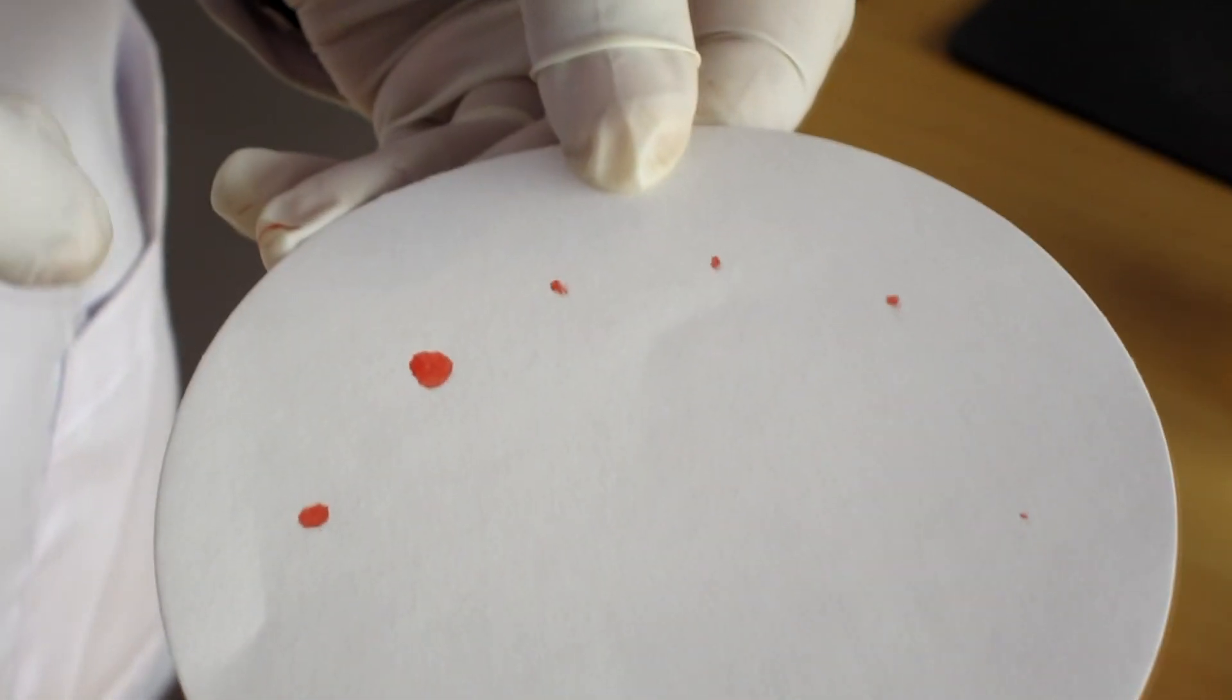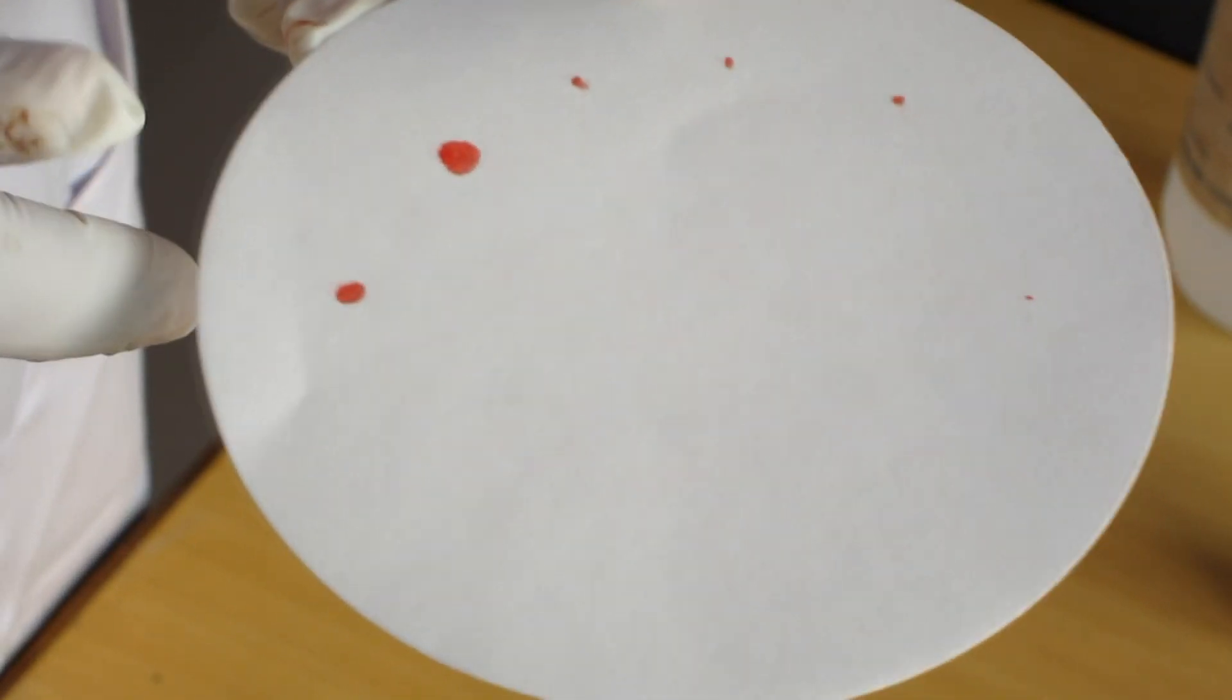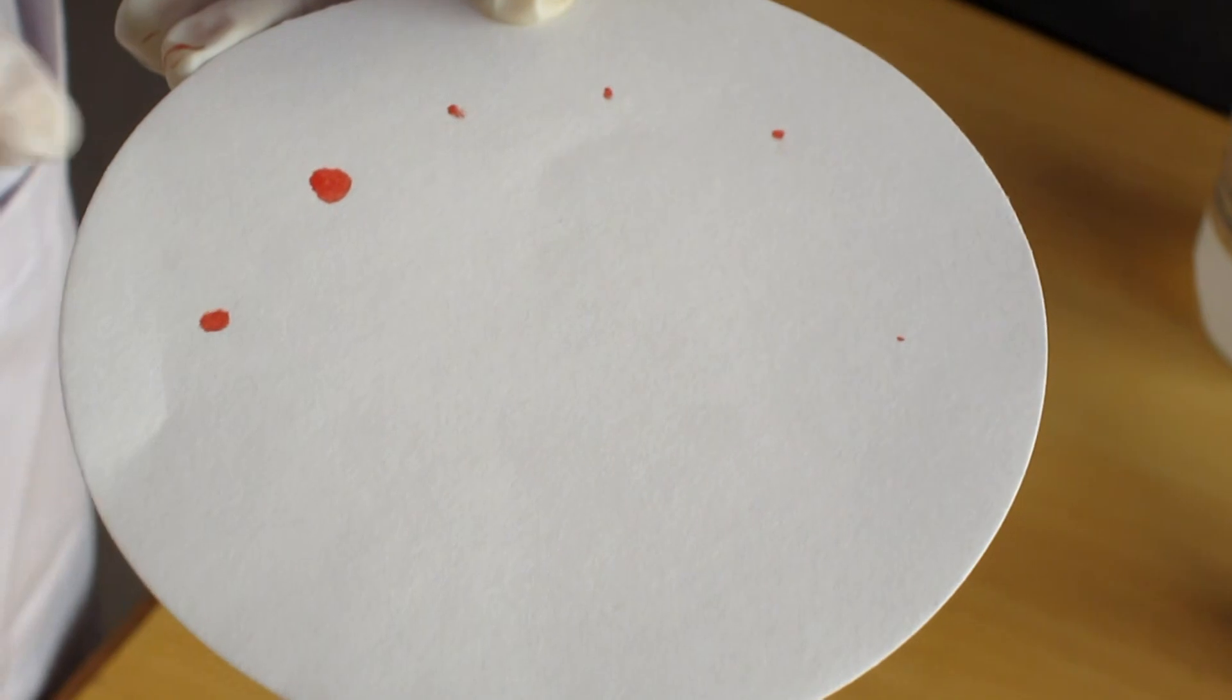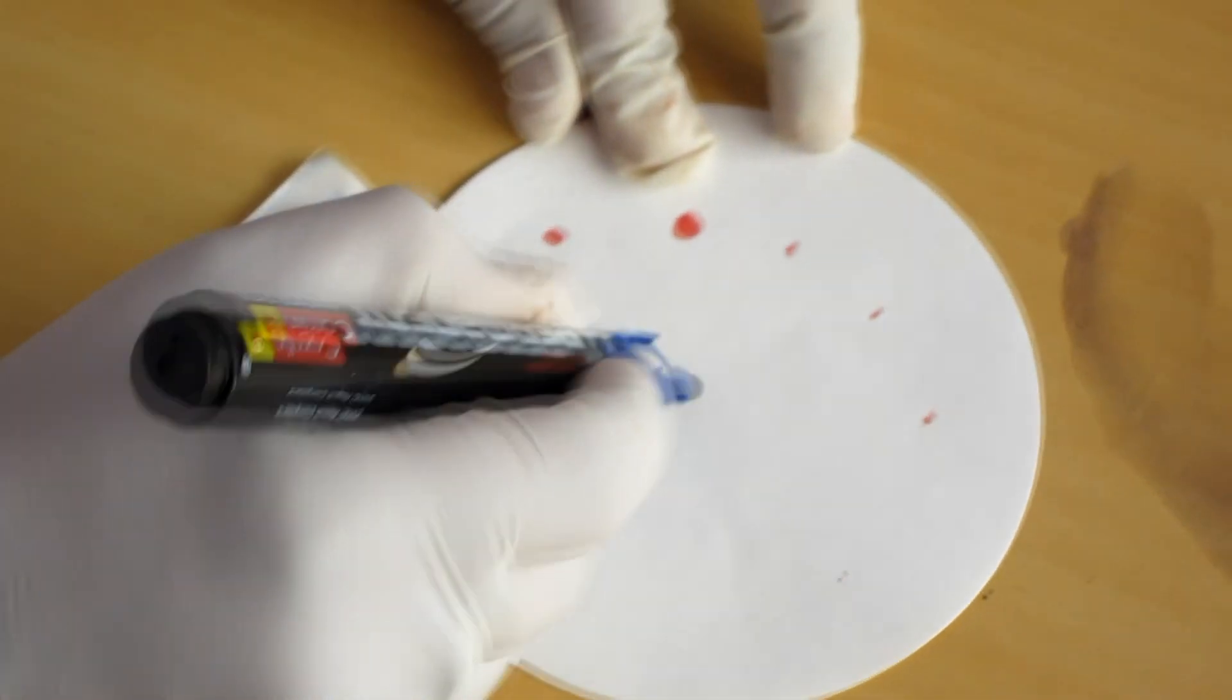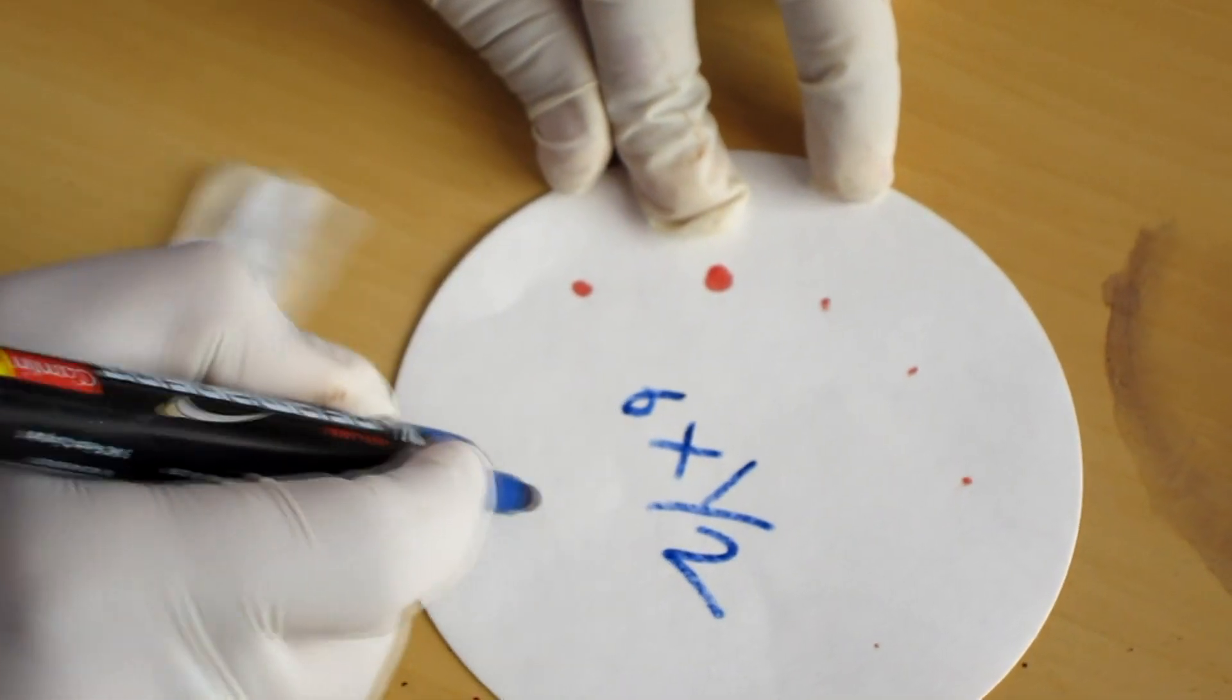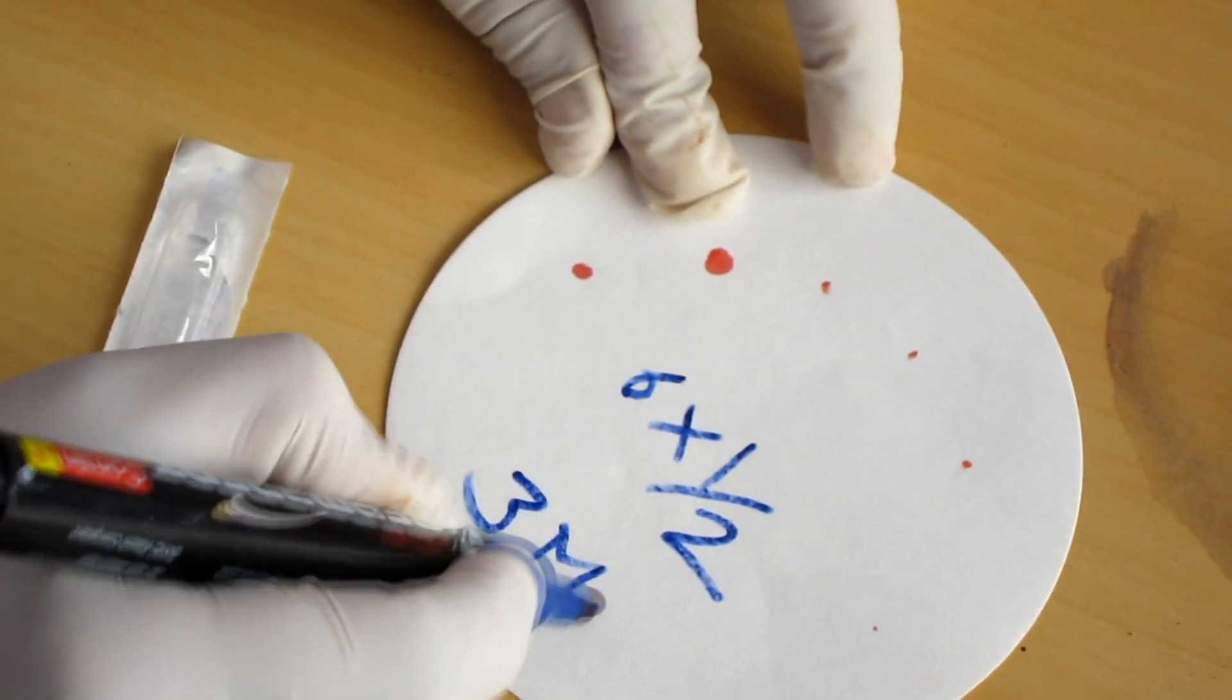Count the total number of spots and multiply by half. So, there are total 6 spots. 6 times 1 by 2 equals to 3 minutes. So, the bleeding time equals to 3 minutes.